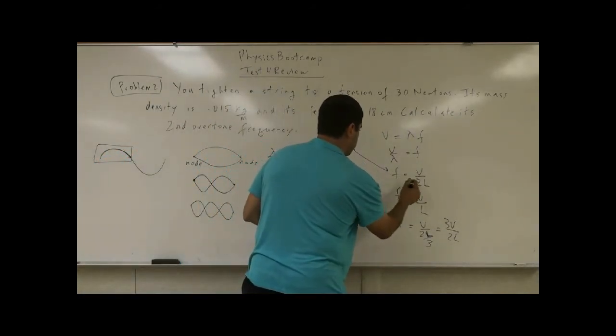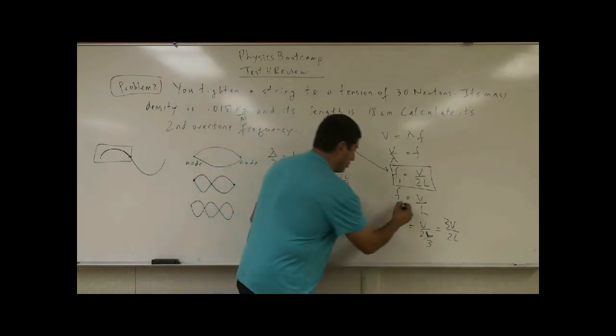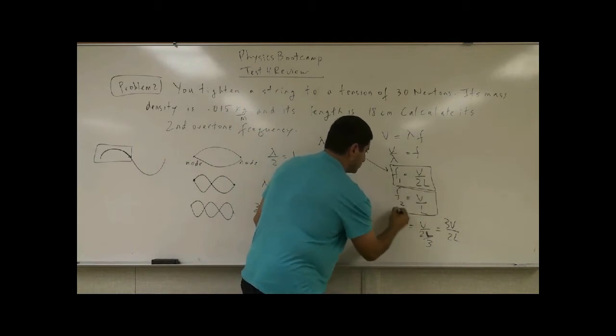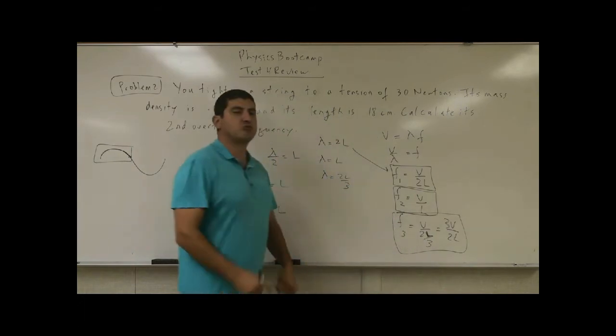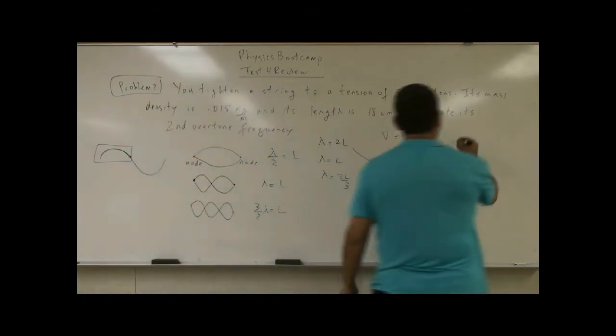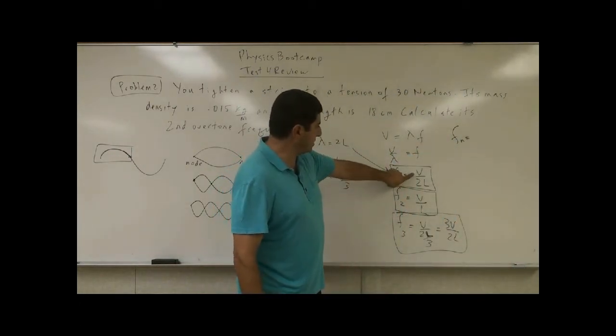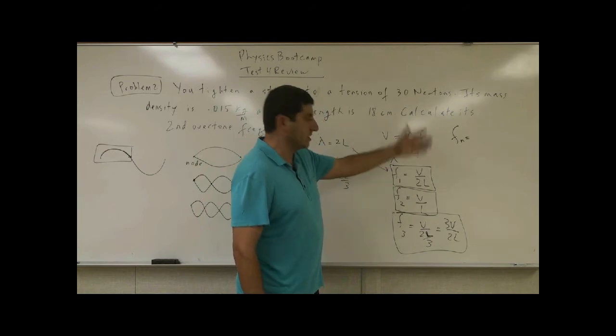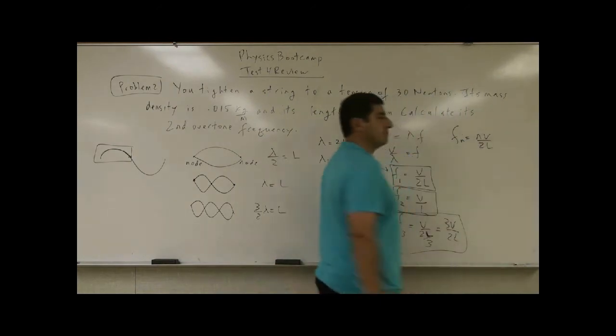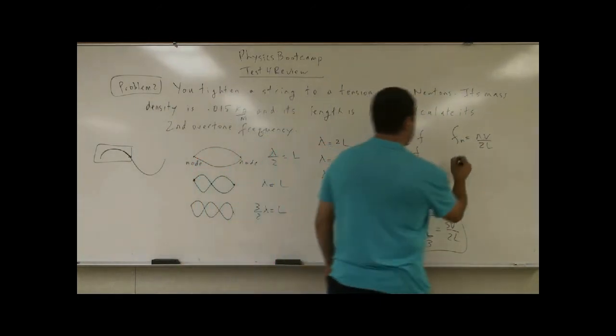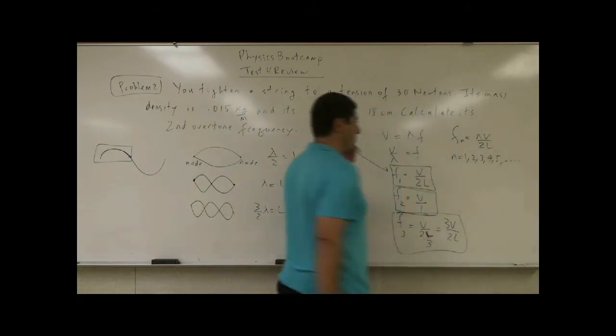This is what I'm going to call here F1. I'm going to call this one F2. I'm going to call this one F3. How can I write this so that I get a general equation out of this? F sub N is equal to what? I notice if I put N here, that I'm actually getting multiples. N V over 2L. I'm getting multiples of V over 2L, where N is equal to 1, 2, 3, 4, 5, so on.